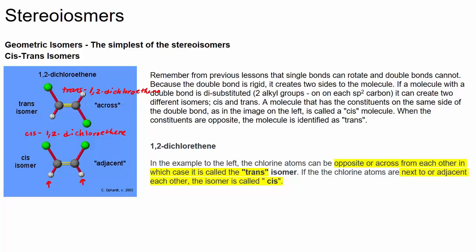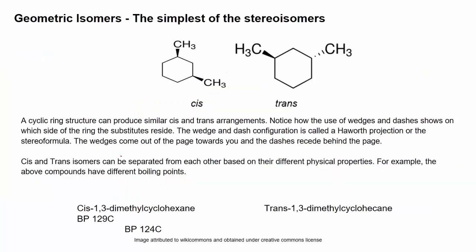You can have trans and cis around a ring structure as well. Those structures would be shown as substituents on the same side of the ring — here we have two wedges coming out towards us indicating same side. Or we could have trans, indicating one on top and one on the bottom. Again they would be named cis and trans, then you go through the naming conventions from Module 2.